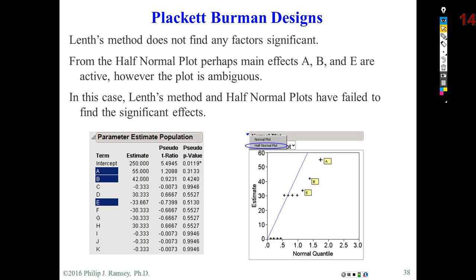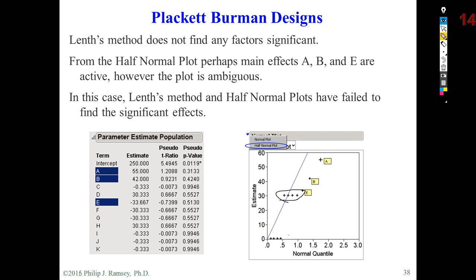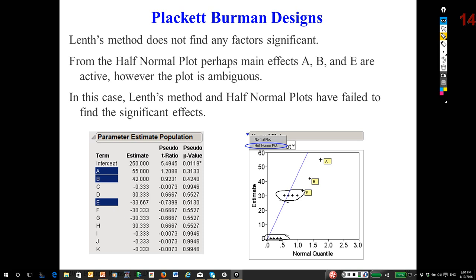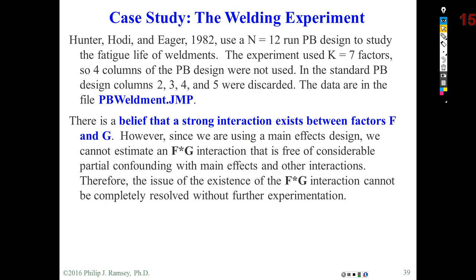What if we tried to use Lenth's method? Lenth's method indicates that maybe A, B, and E are significant, but if you look closely the plot is really ambiguous. The sets of effects shown make it hard to determine what's actually significant. So we can't solely trust Lenth's method and half-normal plots for these designs. At this point I'll end this recording, then talk through a case study from the Hoos and Jones book. I'd like you to read the case study for what's called the welding experiment in the notes. Thank you very much.